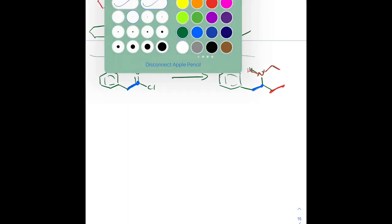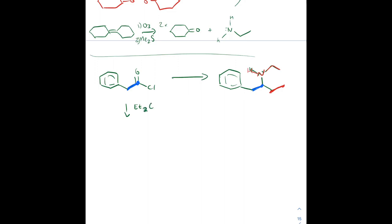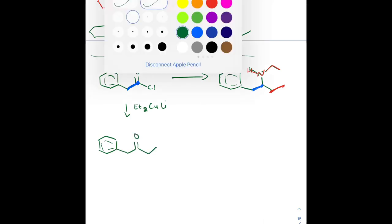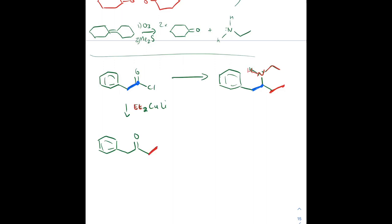We've got an acid chloride and want to make a final product. We highlighted the portions we need to add. Organocuprates can add an ethyl group — those two red carbons — without compromising the carbonyl group, which we want to maintain for a reductive amination. After adding the two red carbons, we have our ketone instead of an acid chloride. Now we throw that in with ethylamine and a reducing agent — either sodium cyanoborohydride or lithium aluminum hydride — to get our desired product.